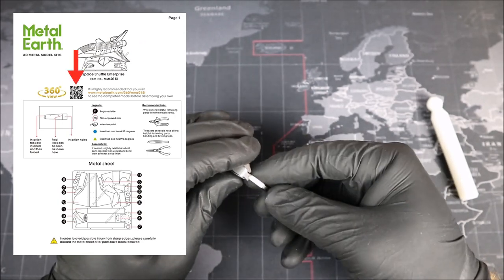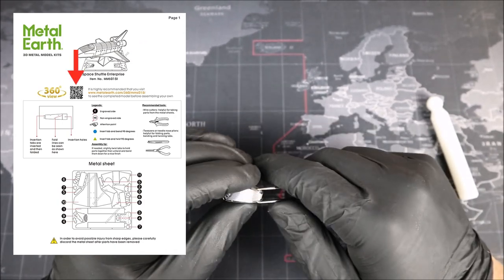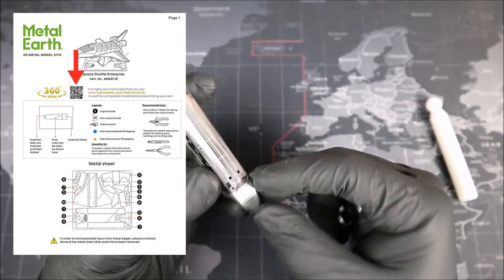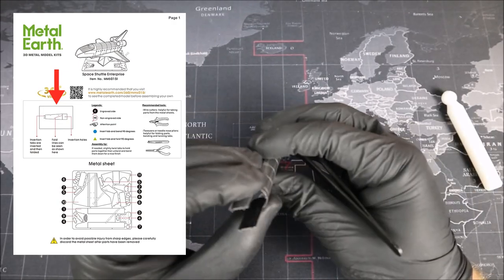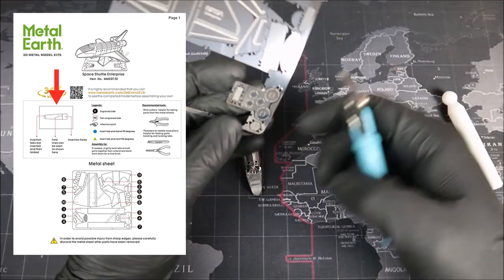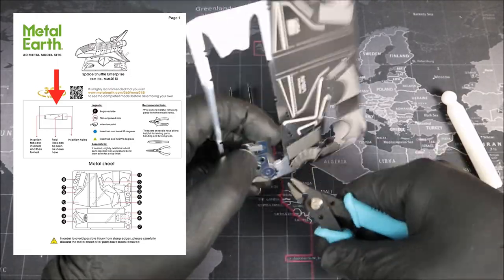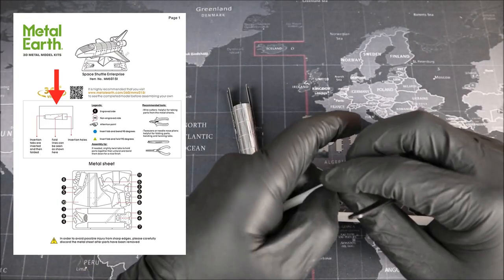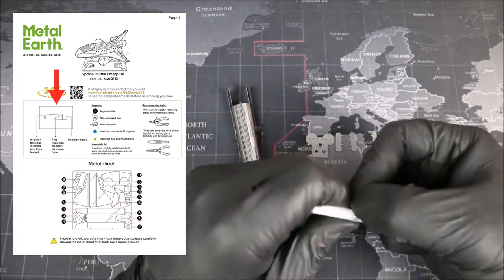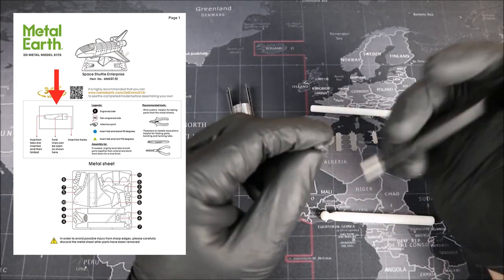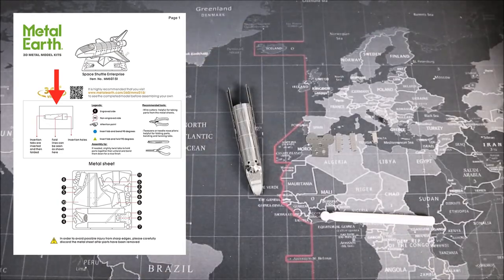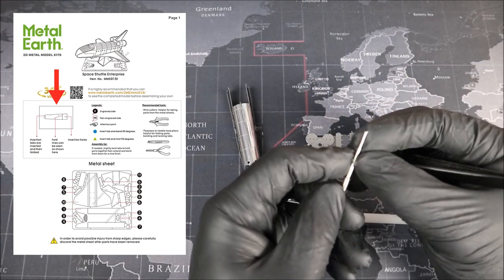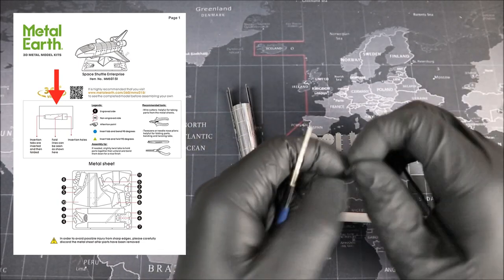Just below, we have a QR code, which we can scan to get a 360 view of our model if we need it while we're building. This can be useful for putting different parts of detail onto our ship. Now, going down and to the left, we have a depiction of one of our parts. You'll see three different labels here: the insertion tabs, the fold lines, and the insertion holes. This is very important to understand because this is kind of the fundamentals of metal model building. What you need to do is make sure that you insert the tabs into the insertion holes, and when you see fold lines, you usually want to fold along those to form the different pieces into the parts that you need to build the Space Shuttle. Once you understand this concept, you're pretty much ready to build these models.